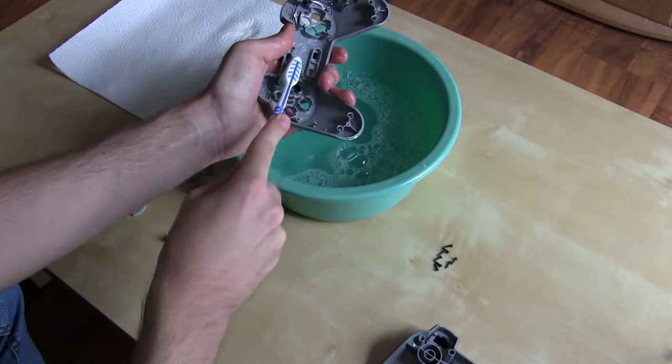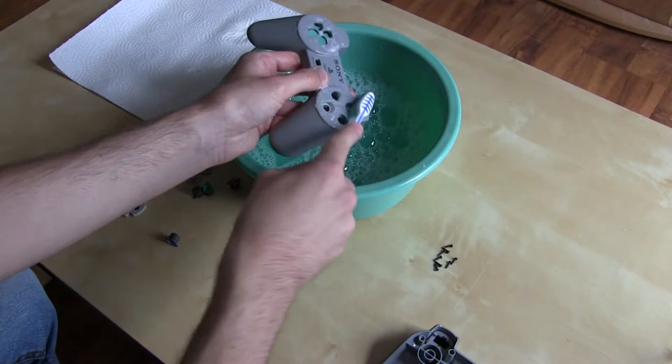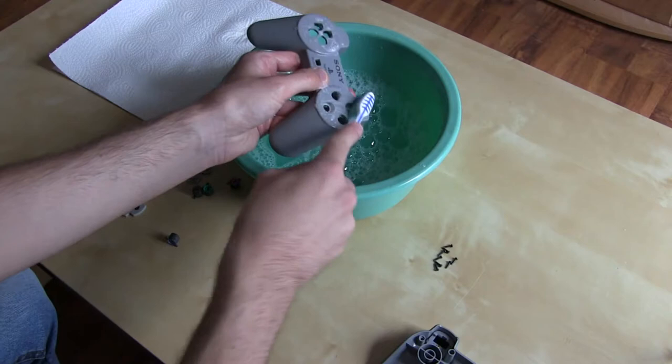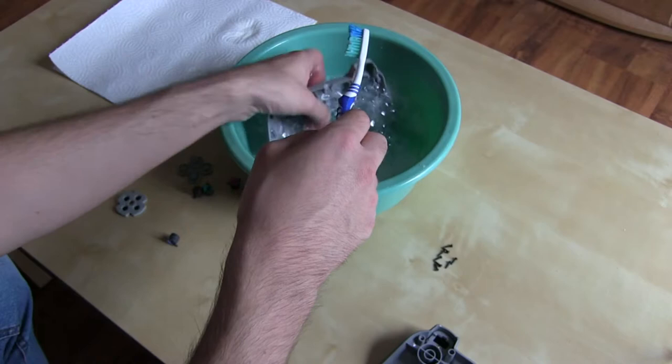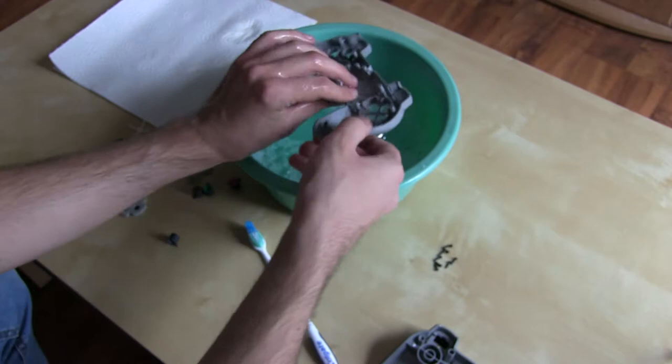Just take your toothbrush, rub it against everything like you do every morning, but with a Playstation controller. I must say the outside of this is already really clean. I don't know if the person I got it from already had it cleaned, but I'll just make 100% sure. But this is already a pretty clean controller.